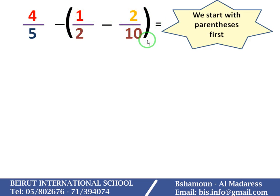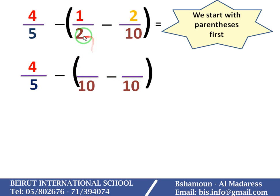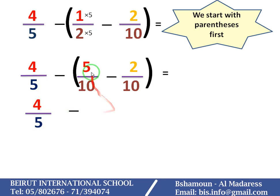So, as I said, we start with the parentheses. I bring down the 4 over 5, the minus sign, and I find the common denominator of 10 and 5. Since 10 is a multiple of 2, so the denominator will be 10. To get denominator 10, I multiply the 2 by 5, so I multiply the numerator by 5, and I get 5 over 10 minus 2 over 10. I bring down the 4 over 5 and the minus sign. 5 minus 2 is equal to 3 over 10. Now I can remove the parentheses, since I get only one fraction.